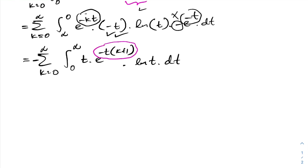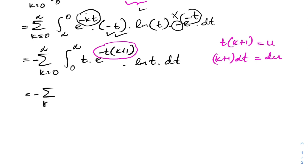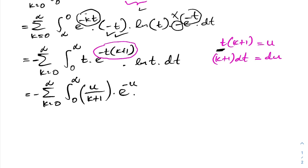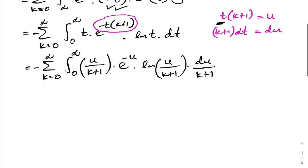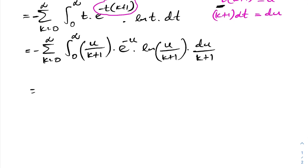I will take another substitution: let t times (k plus 1) equal u. Then (k plus 1) dt equals du. The limits remain 0 to infinity. We now have minus sum from k equals 0 to infinity of the integral from 0 to infinity of u over (k plus 1) times e to the minus u, times natural log of u over (k plus 1), times du over (k plus 1).